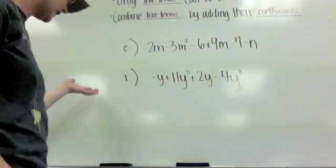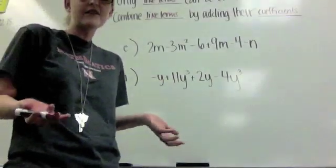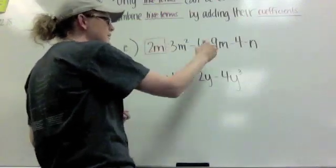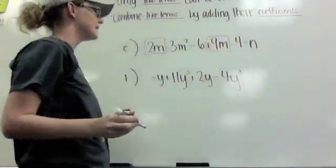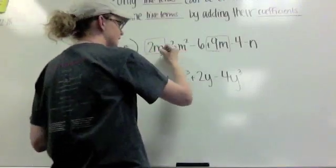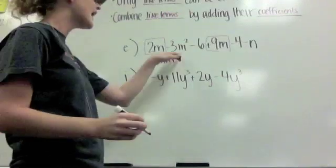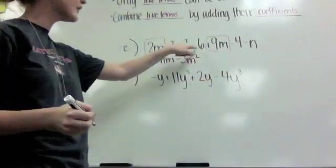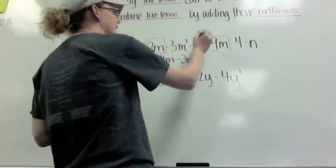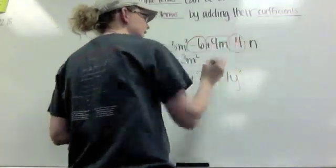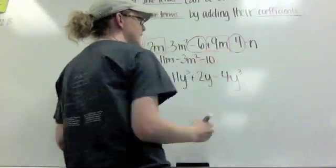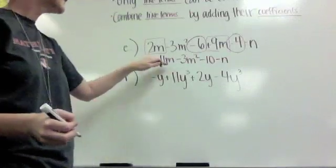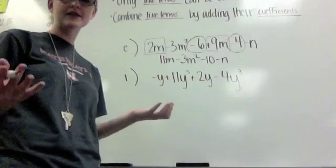Okay? So when I look at these examples on e, I'm looking for what can I put together? Well, it's got to have exactly the same variable part. So if I look at this right here, I see a 2m. I can put that together with the 9m. Okay? When I do that, 2m plus 9m would be 11m. Okay? I don't have anything to put with the negative 3m squared, so I just leave it. Okay? If I look at the negative 6, are there any other just numbers I can put that with? Yeah. I can put negative 6 with negative 4. That would be negative 10. And then finally, I have the little n down there. Well, I don't have anything to put with the n, so I just write minus it. Now, okay, all variable parts are different. I've combined the like terms.